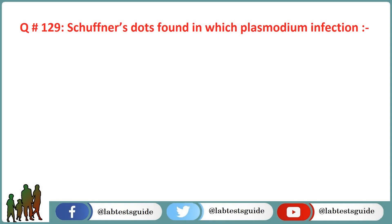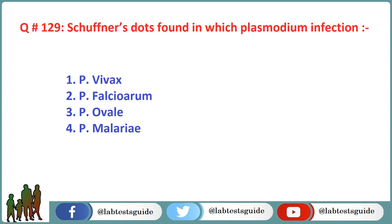Next question is 129: Schüffner's dots are found in which Plasmodium infection? Option 1: P. vivax. Option 2: P. falciparum. Option 3: P. ovale. Option 4: P. malariae. The correct answer is Option 1: P. vivax.